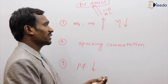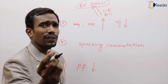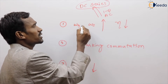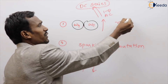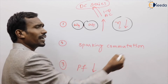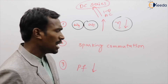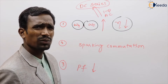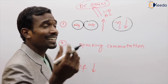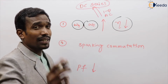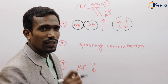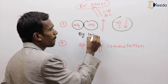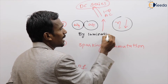The third difficulty is that the power factor decreases. These are the three difficulties when single-phase AC supply is given to a DC series motor.